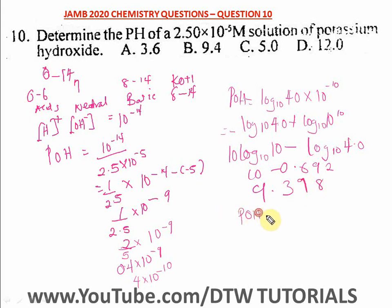So when you approximate, you get 9.4 approximately. So the answer is option B. When you determine the pH of a 2.50 times 10 to minus 5 molar solution of potassium hydroxide, it gives us 9.4, option B.